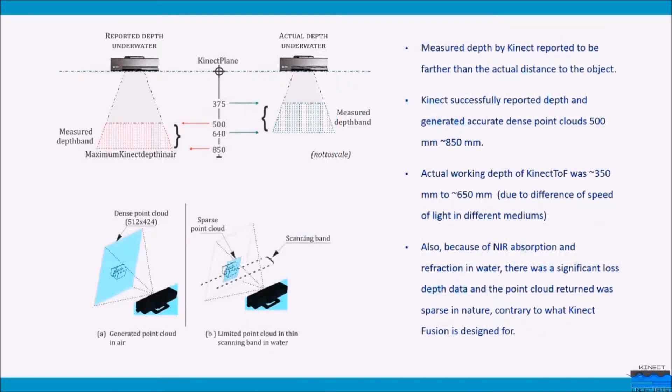Kinect reported depth up to 500mm to 83mm whereas the actual working depth of Kinect was 350mm to 650mm due to the difference of speed of light in different mediums. We have developed a simple time-of-flight correction method to correct the distances reported by Kinect Sensor during 3D scene reconstruction.